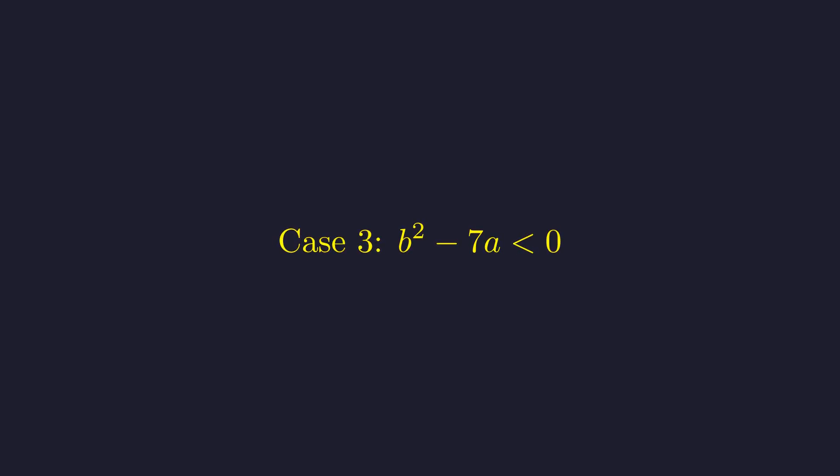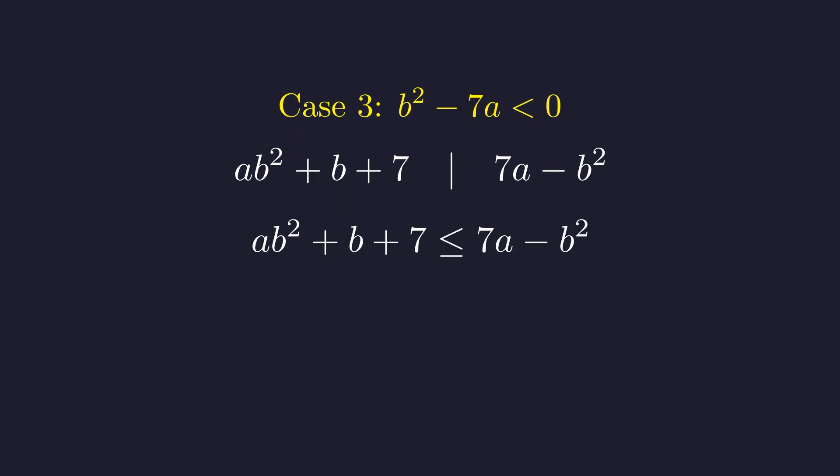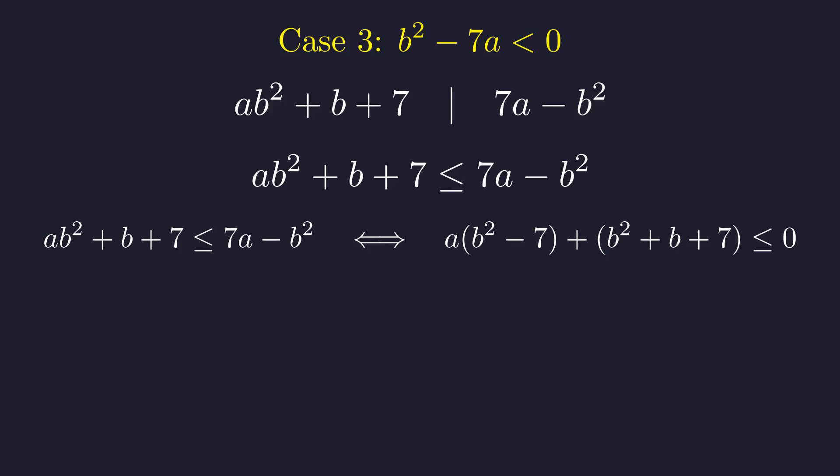Case 3: b squared minus 7a is less than 0. This case may yield a finite number of solutions. Our necessary condition is that d divides b squared minus 7a. Since d is positive and b squared minus 7a is negative, d must divide the absolute value, which is 7a minus b squared. Applying the magnitude principle gives ab squared plus b plus 7 is less than or equal to 7a minus b squared. Rearranging and factoring gives a times (b squared minus 7) plus b squared plus b plus 7 is less than or equal to 0.